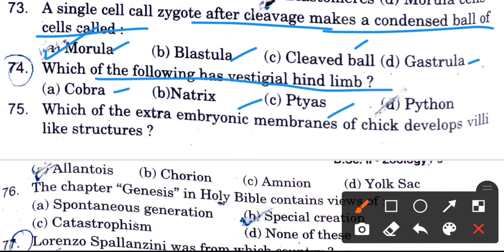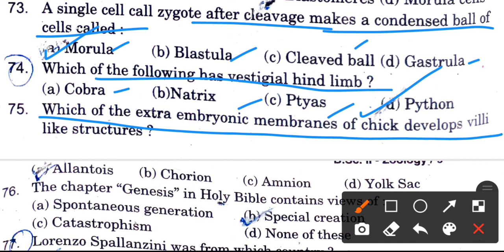Which of the following has vestigial hind limbs? Options are cobra, nitrous, and python. The answer is python. Which of the extra-embryonic membranes of chick develops villi-like structures? Options are allantois, chorion, amnion, and yolk sac. The answer is allantois.